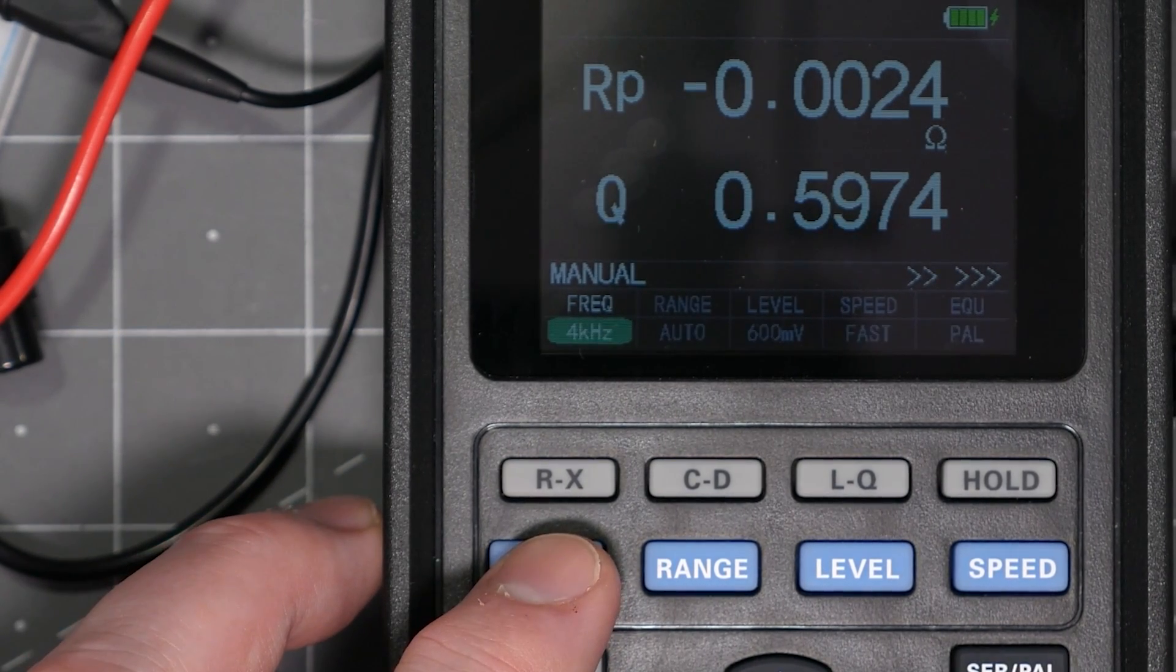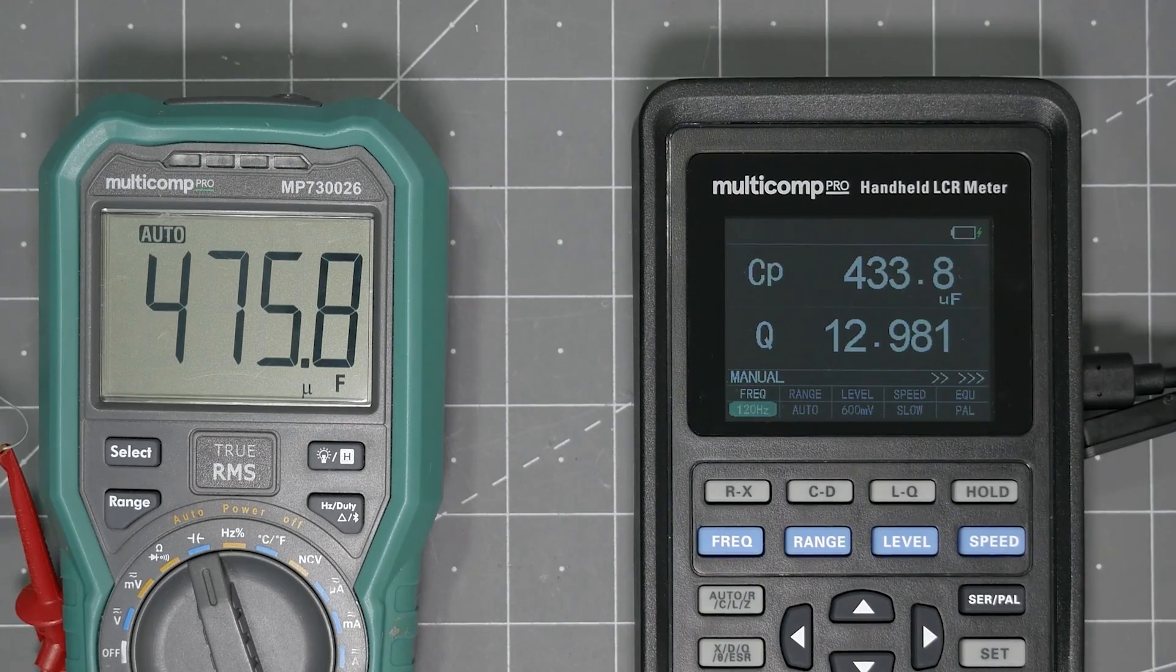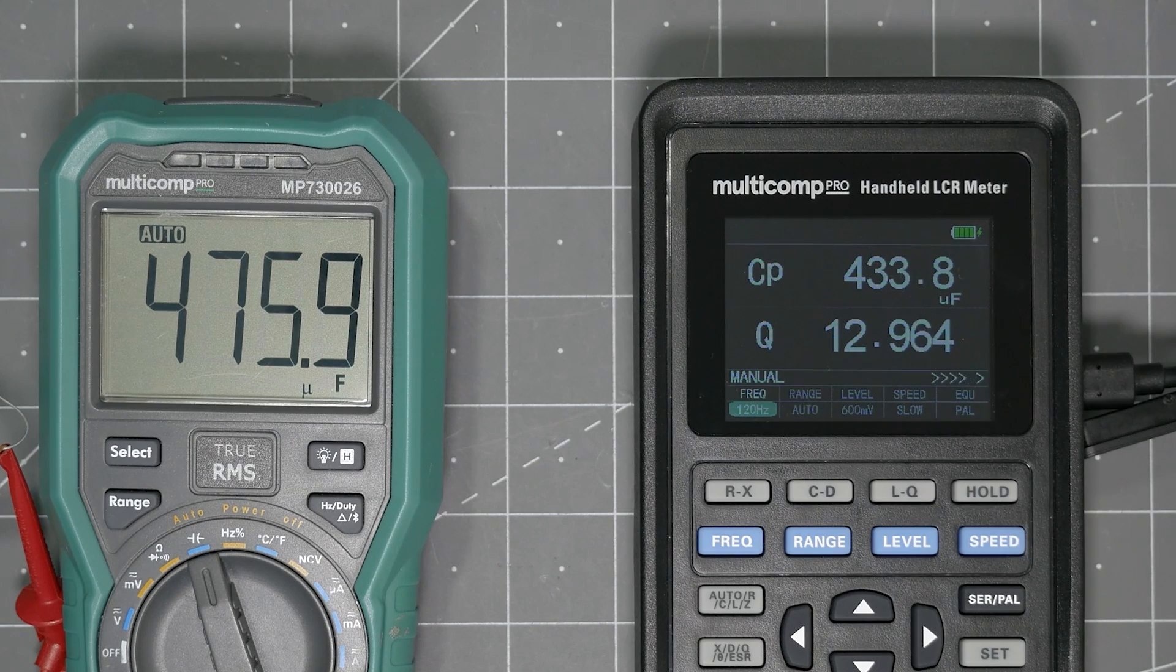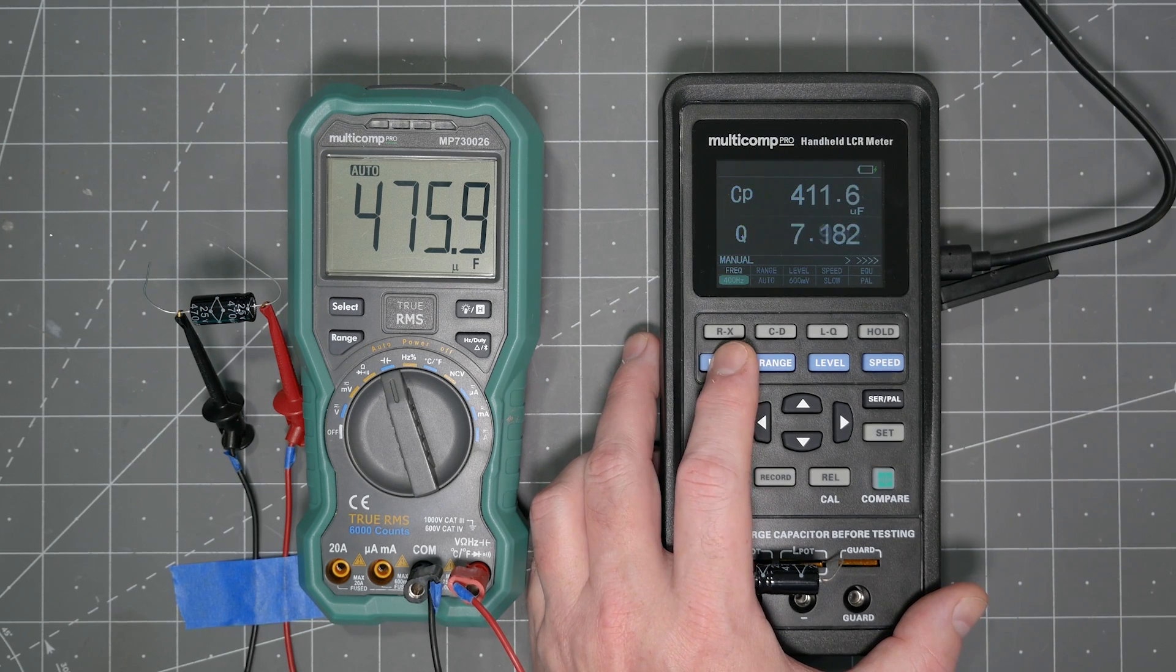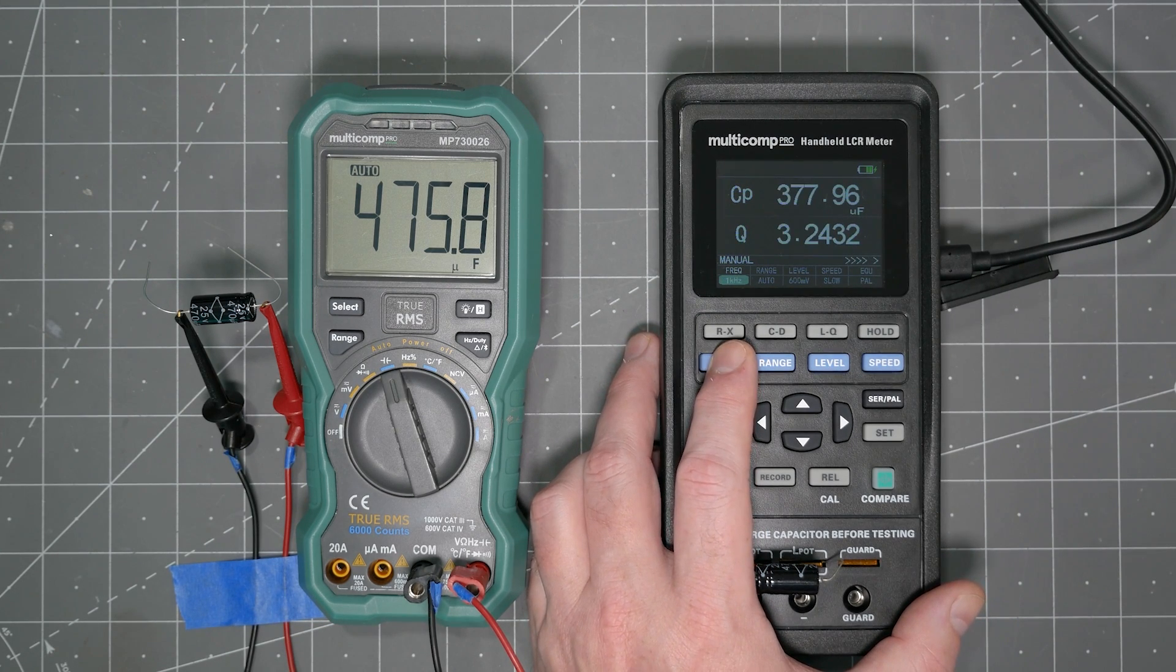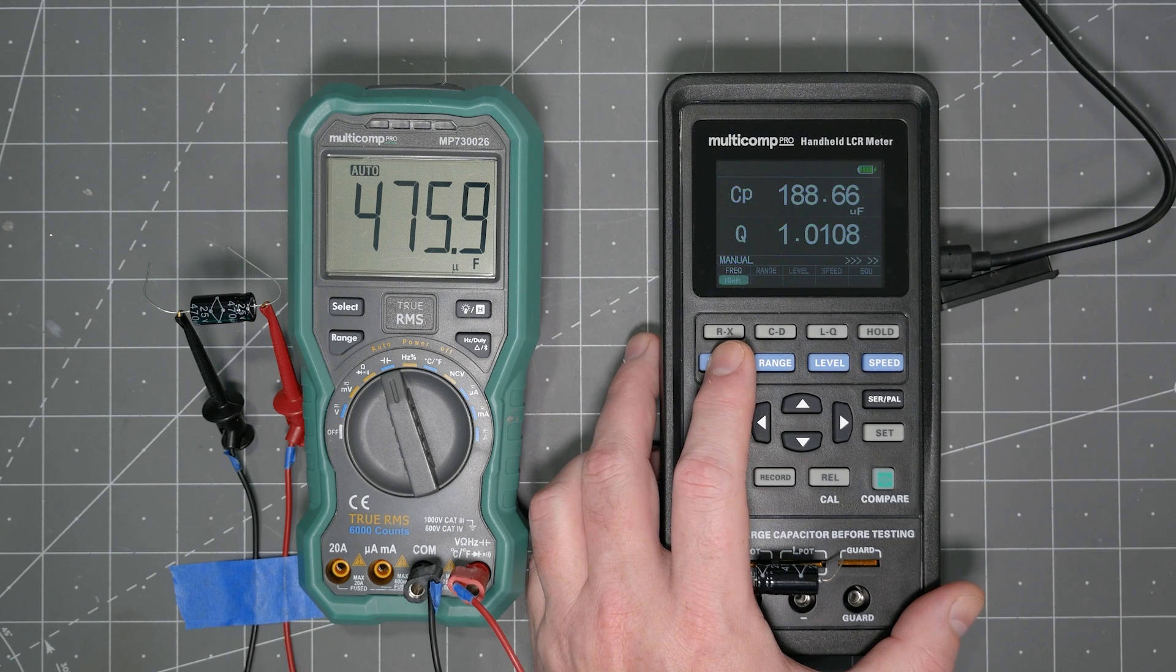A meter like this one measures components with different frequencies. Comparing that to a DMM, which effectively only does a DC measurement. See how these two meters read completely different capacitance values, and how the capacitance changes as the frequency goes up. Now, our cutoff frequency is 159 kHz, but the closest we can get with this meter is 100 kHz. At least it's not DC.